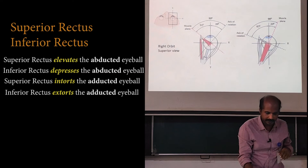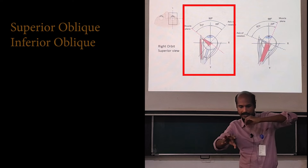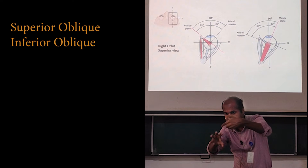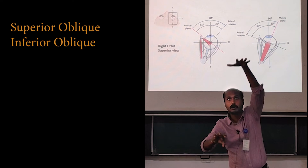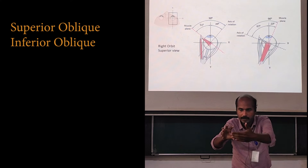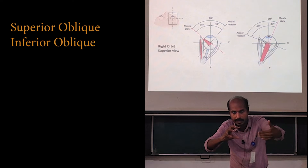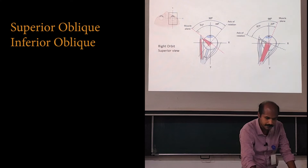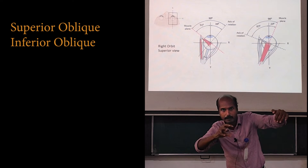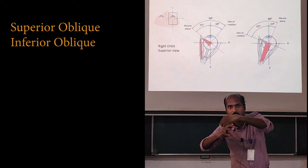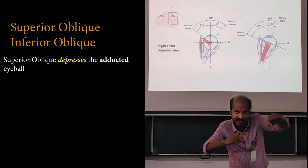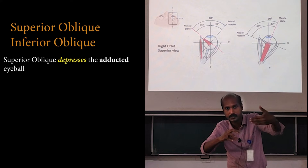Now we will look at the actions of the obliques. The superior oblique is a unique muscle. It takes origin from the apex, runs at the junction between the medial wall and the roof, takes a turn at the pulley, and then attaches to the eyeball. When the eyeball is adducted into a plane parallel to the superior oblique line of pull — at 51 degrees from the line of primary gaze — the superior oblique can pull the eyeball into depression. So the superior oblique is a depressor of the adducted eyeball, because when adducted it comes in line with the superior oblique line of pull.